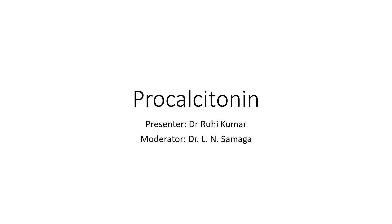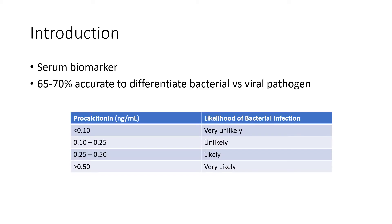Good morning everyone. The topic for my subject seminar is procalcitonin and my moderator is Dr. Samaga. So what is procalcitonin? It is a serum biomarker which helps us differentiate between bacterial and viral infection. It is present in cases of bacterial infection and absent in cases of viral infection, and it is 65-70% accurate to differentiate between these pathogens.